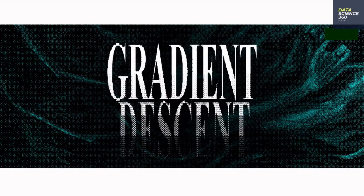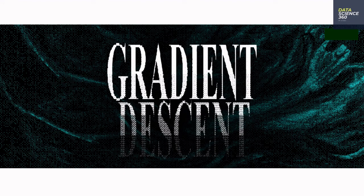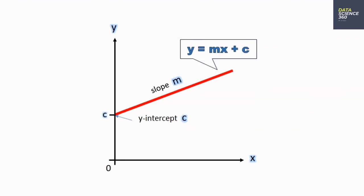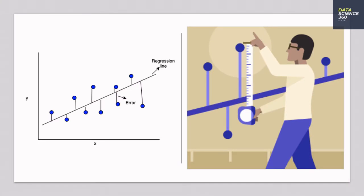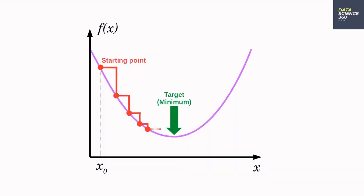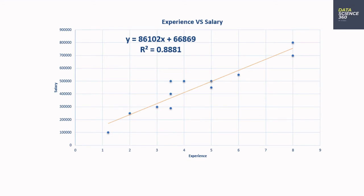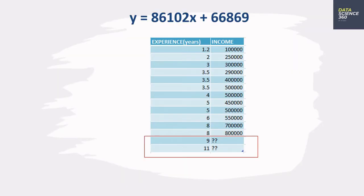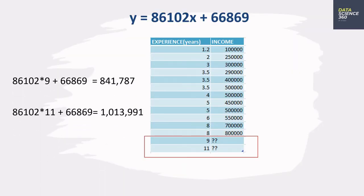How does the machine do it? Gradient descent. It is an optimization algorithm used for minimizing the cost function in various machine learning algorithms. The machine starts by taking a random value for M and C and draws a line. It then finds the square of the difference between the actual value and the line for each point in the graph and adds them. The machine keeps doing this for multiple values of M and C until the sum of square distances reaches a minimum point, and then it stops. Now this is the best fit line — we finally have an equation tuned according to the input data. Now we can pass any X value that is not in the original data and we will get the prediction.